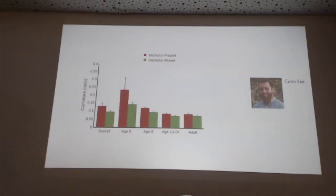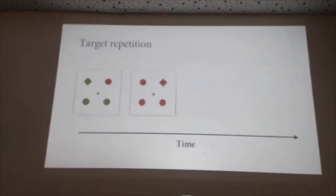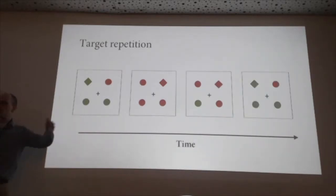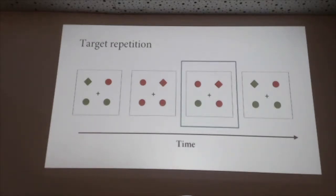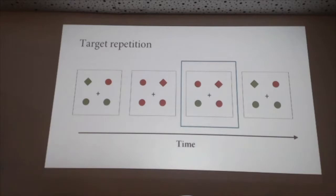In addition to salient distractor effects, we also looked at sequential effects across trials. In this task you get sequences of trials where you point to a diamond on each trial. On some trials there's a target location repetition — the target was in the upper right, and on the last trial it was in the upper right again. You have this recent repetition that might lead to something like priming, similar to work on priming of pop-out.